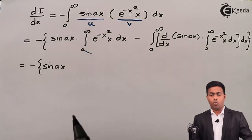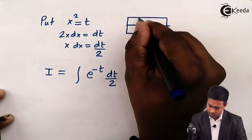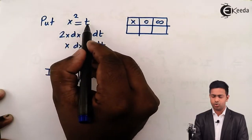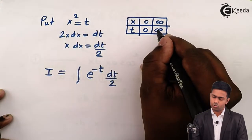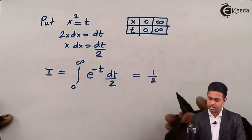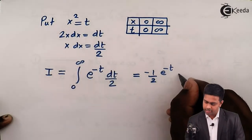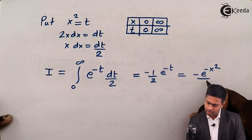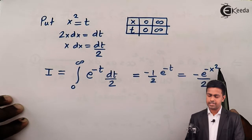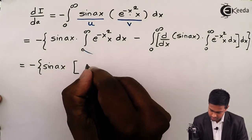The limit is from 0 to infinity for x. When x = 0, t = 0²= 0; when x = infinity, t = infinity — so limits remain 0 to infinity. Solving this gives (1/2) outside, and the result is minus e^(-t)/2. Re-substituting t = x² gives minus e^(-x²)/2. So the integral of this term is minus e^(-x²)/2.